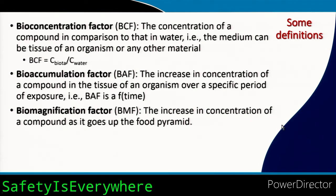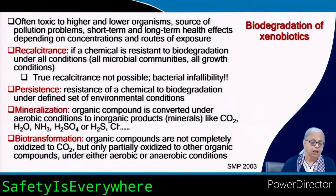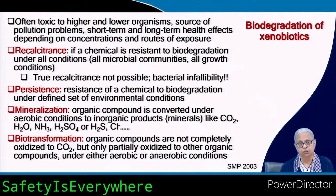The biomagnification factor tells us about the increase in concentration of any compound as it goes up the food pyramid. Whatever concentration is present in the water will increase in the tissue of phytoplankton at the bottom of the pyramid, and right up to the top of the pyramid, you get increased concentration of the compound in the tissue of the organisms at each trophic level.